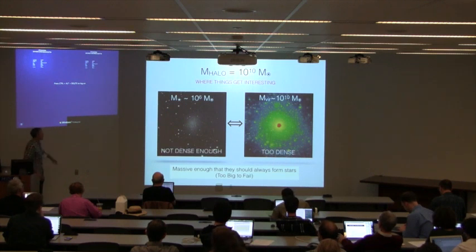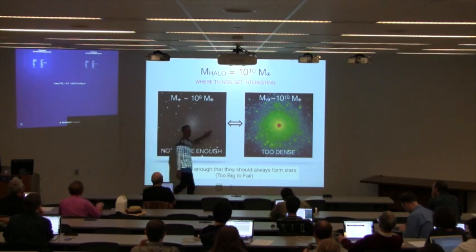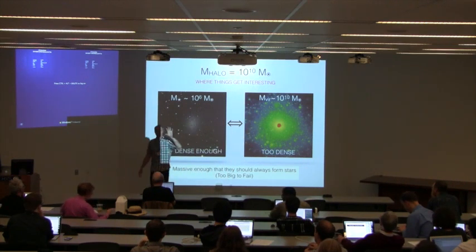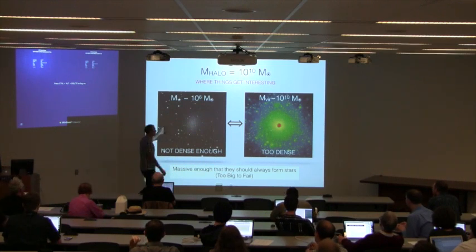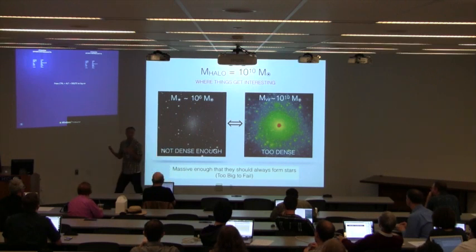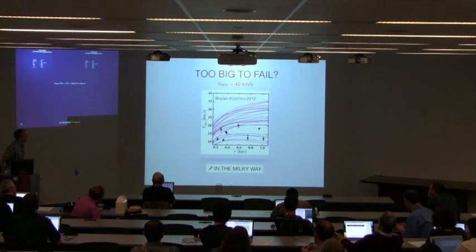When you go out and measure the densities of little galaxies that look like this, they're not dense enough — especially if you ask a theorist. There's a mismatch in density: galaxies of mass 10^6 solar masses are simply not as dense as the cores of 10^10 solar mass halos, as you'd expect to produce them in dissipationless simulations. This is the essence of what we call the too-big-to-fail problem.